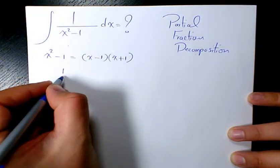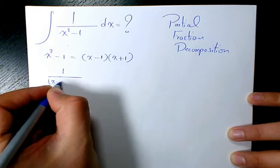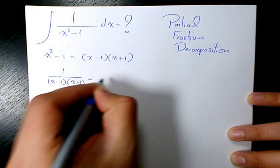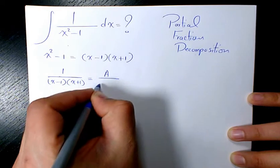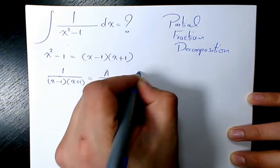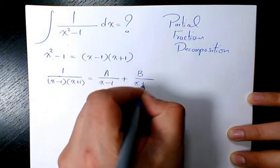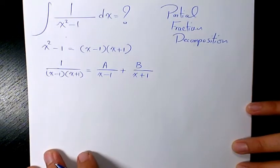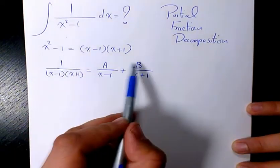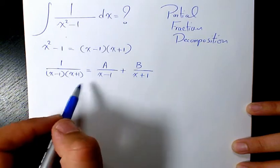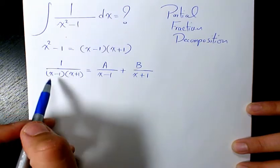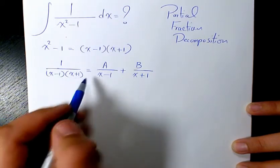So we can have 1 over x minus 1 times x plus 1 has to be equal to A divided by x minus 1 plus B over x plus 1. Now we need to find out the values of A and B. So how do you do that?